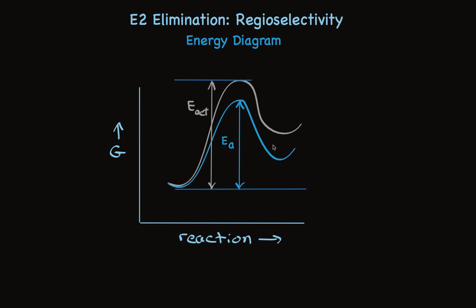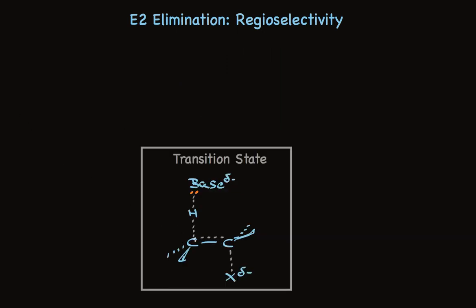Does that make sense? Well, let's look back at the transition state itself. In the transition state, that structure already looks a lot like an alkene. There's a significant amount of the pi bond formed already.